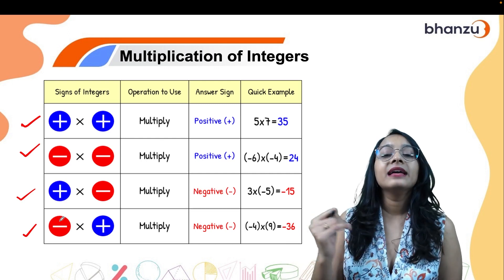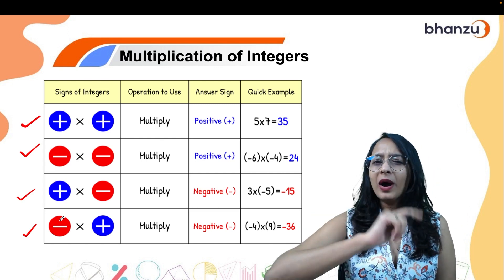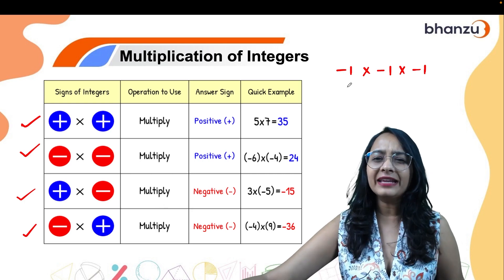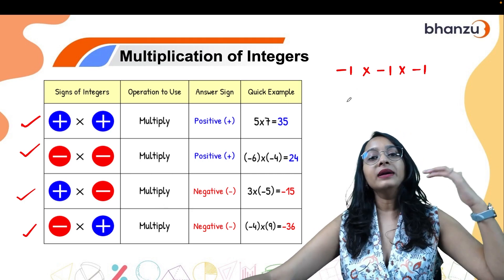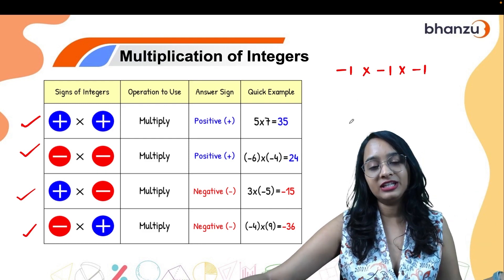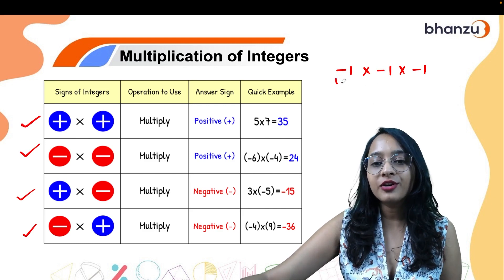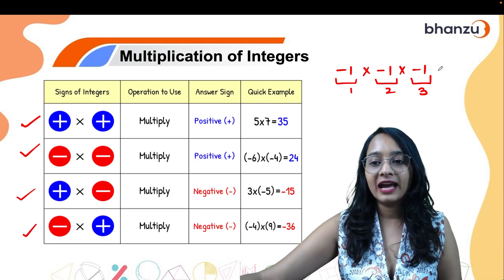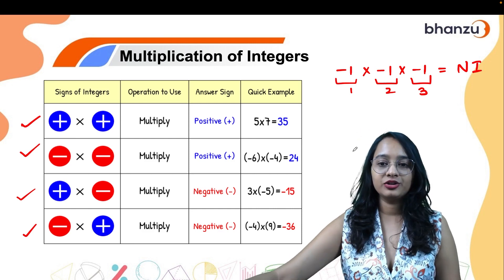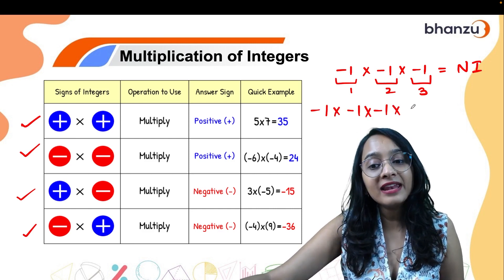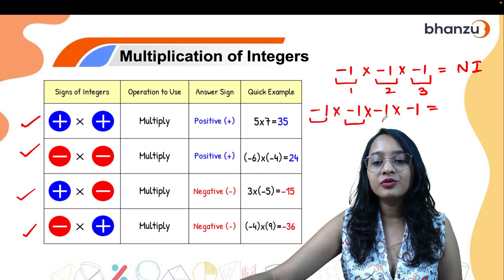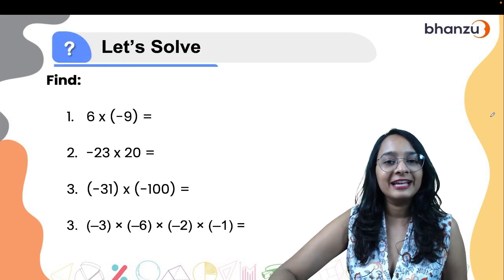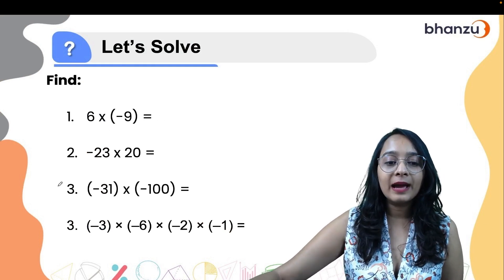One more thing to notice: if you multiply an odd number of negative integers — I have taken minus 1 as an example, but this applies to any negative integers — when you multiply a negative integer an odd number of times, the answer is always a negative integer. If you multiply a negative integer an even number of times — one, two, three, four — the answer is always a positive integer.